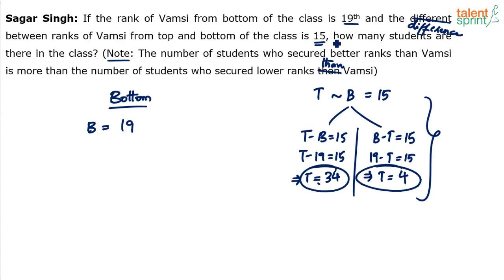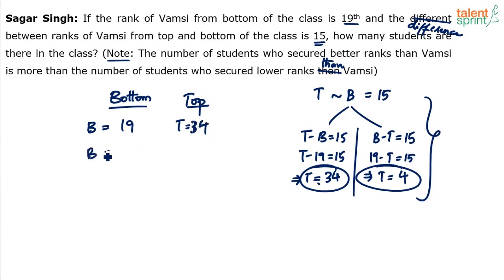So either the rank from top is 19 plus 15 = 34, or 19 minus 15 = 4. There are two possible top ranks: either the rank from top is 34 with bottom rank 19, or rank from top is 4 with bottom rank 19.